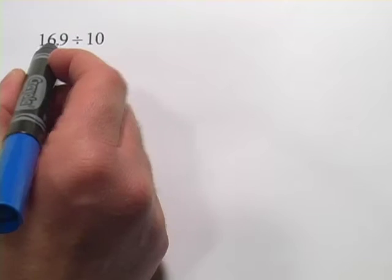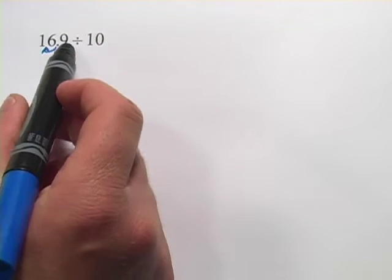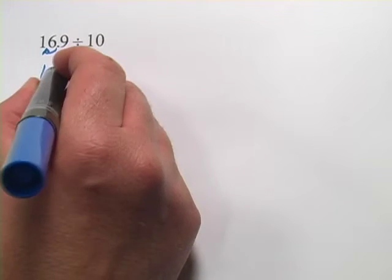When you divide by 10, you move your decimal point to the left one place. So 16.9 divided by 10 is just going to be 1.69.